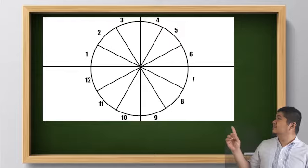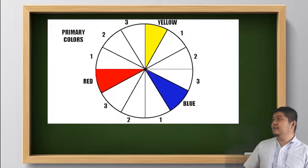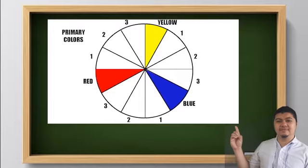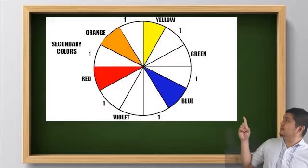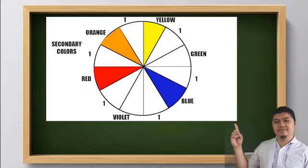Then, you will place the primary colors, leaving three spaces per color. Then, secondary colors at the center of the primary colors. We will see red and yellow create orange, red and blue create violet.